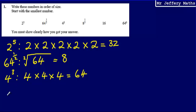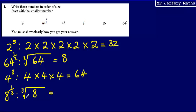The next one, we've got 8 to the power of 1 third. Again, what we said before is also true here — we are going to take the third root, so the cube root of 8. To answer this, we need to ask ourselves: what multiplied by what multiplied by what gives us 8? That value is going to be 2. 2 times 2 is 4, times 2 makes 8. So the cube root of 8 is 2.